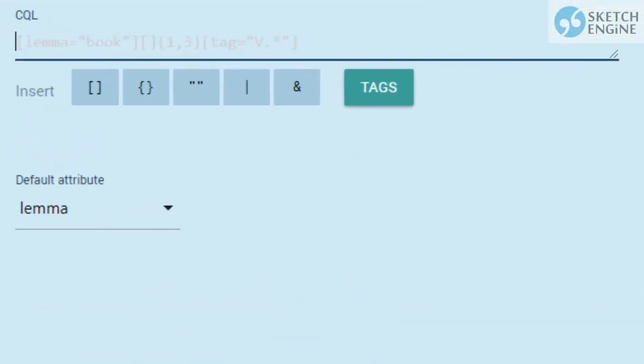There are three words in the phrase, so three pairs of square brackets are needed, one for each token. Each word is a token and punctuation is a token too. The first token is the word 'mind'.